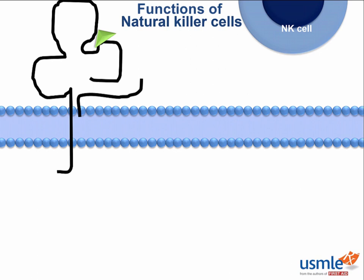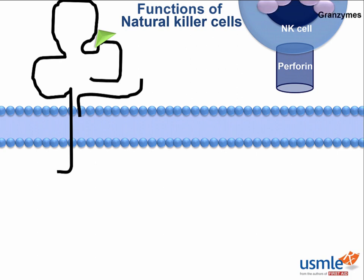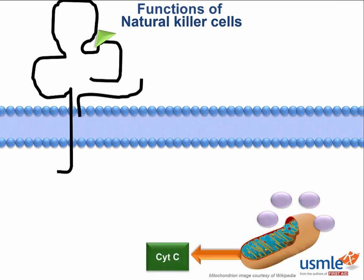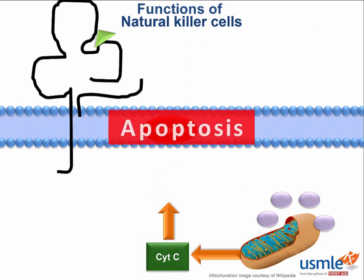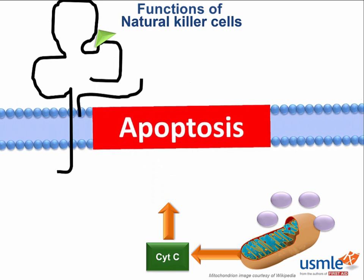So how do they do this? First, they can use a protein called perforin to drill a hole in the target cell's membrane. And they send through this hole enzymes called granzymes, which can trigger the caspase cascade, ultimately leading to apoptosis.